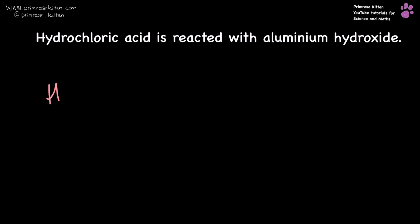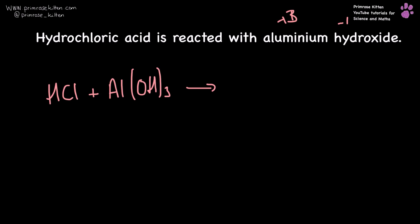Hydrochloric acid is reacted with aluminium hydroxide. So we're going to get our ions swapping over — we are going to get aluminium chloride and water. Now if we need to balance that, I need three chlorines, so I'm going to need a three in front of the hydrochloric acid and we're done.